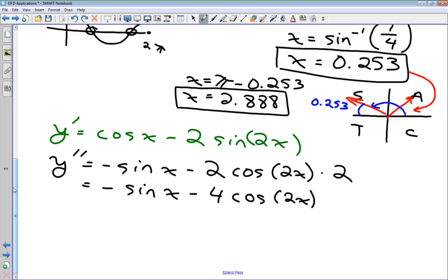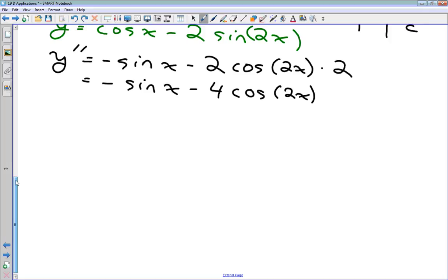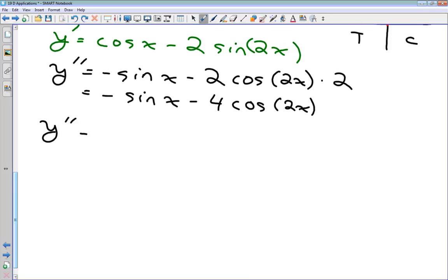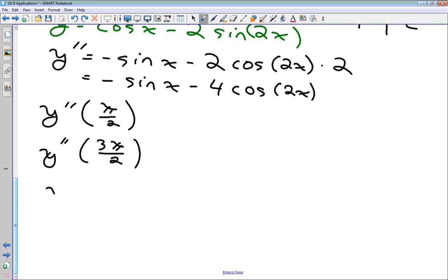So at this point, I just have to plug those x values into my second derivative. So let's just use this notation. I'll just do y double primed, and then what number I'm subbing in. So we had π over 2. We had 3π over 2. We had 0.253. And then we had 2.888.